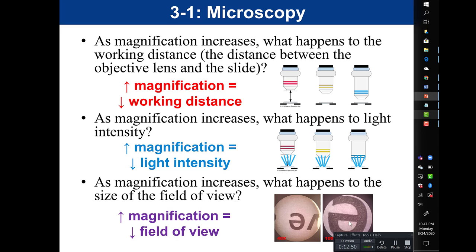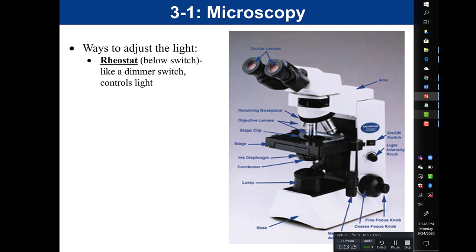Because working distance decreases with magnification, we only use the fine focus — the lens is now very close to the slide. Because light intensity decreases, we need to make adjustments to allow more light into the lens. And because field of view decreases, we zoom in on a smaller area. There are several ways to adjust light intensity. One is the rheostat — the light intensity knob — which works like a dimmer switch, controlling the amount of light from the lamp.